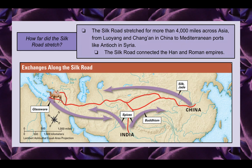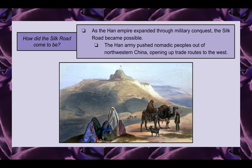The Silk Road connected the Han and Roman empires. So how did the Silk Road come to be? As the Han Empire expanded through military conquest westward, the Silk Road became possible. The Han army pushed nomadic peoples out of northwestern China, which opened up trade routes to the west.